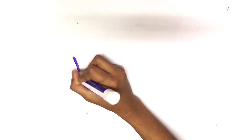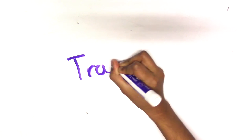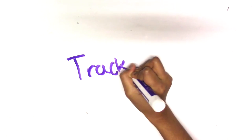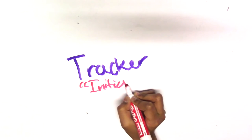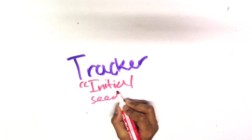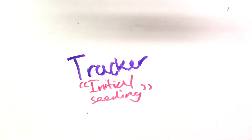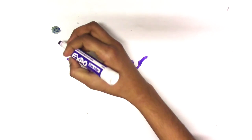So, this is the life of a torrent. At first, the tracker would give the first downloaders a few pieces of a file when the torrent initially starts. This is called initial seeding.